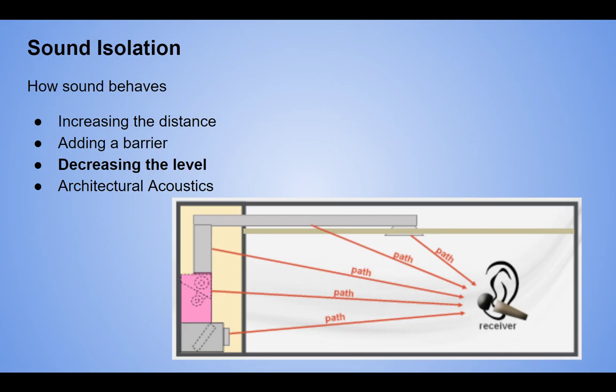So: increase distance first — that's number one. Add a barrier — number two. If those two don't work, decrease the level at the design stage, then fix the architectural acoustics. We do not fix the architectural acoustics first and work backwards. That's our sound isolation. Our next lecture will do an actual sound isolation calculation for a given problem, then finish up with a background noise calculation — a full simplified path through a mechanical system.